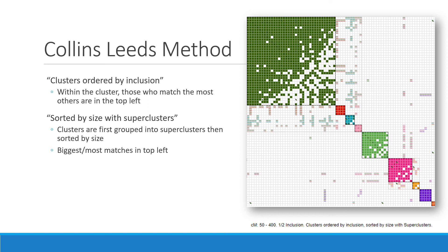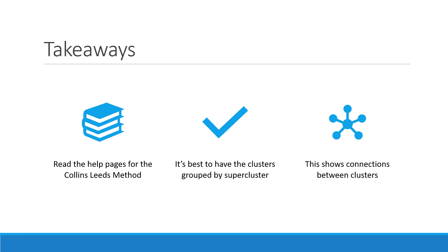The takeaway from this question and answer is that you should read the help pages for the Collins-Leads method, because they explain what all the different settings mean. It's best to have clusters grouped by super cluster, because this shows connections between clusters and can help you identify which side a cluster is on, the common ancestral couple, and unknown clusters linked to known clusters — helping you identify unknown ancestors, which is a major goal in genetic genealogy. Just remember that viewing your clusters by super cluster can help you see connections between them. Good luck!